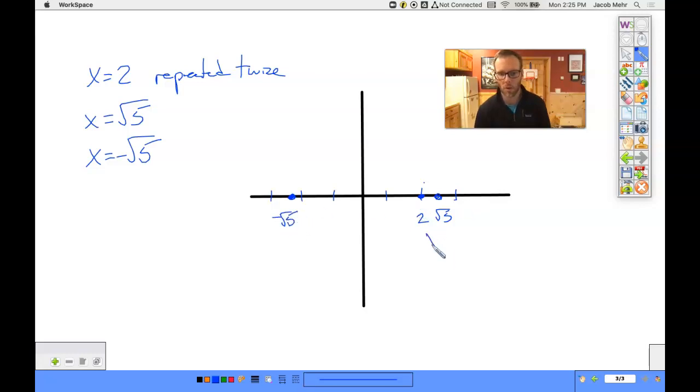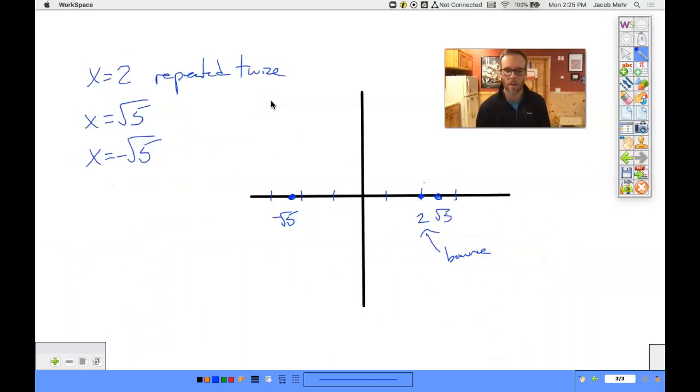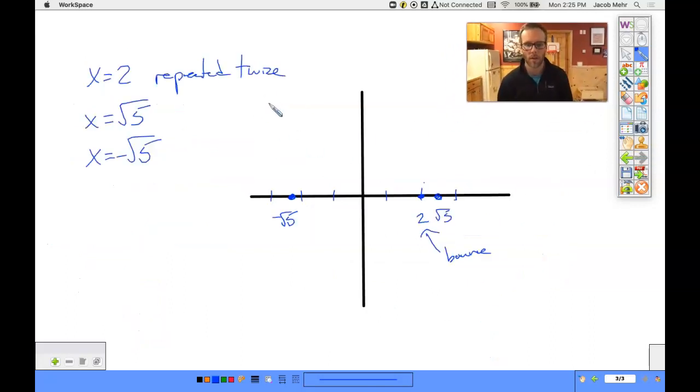Now this is repeated twice at 2. So that means we're going to bounce. And our end behavior is our leading coefficient is positive and it's even. This is both going up. So I'm starting up here and finishing up here. I know I need to come down, come up. Remember at 2 we're bouncing. So it's going to hit, go back down, and then go back up through.